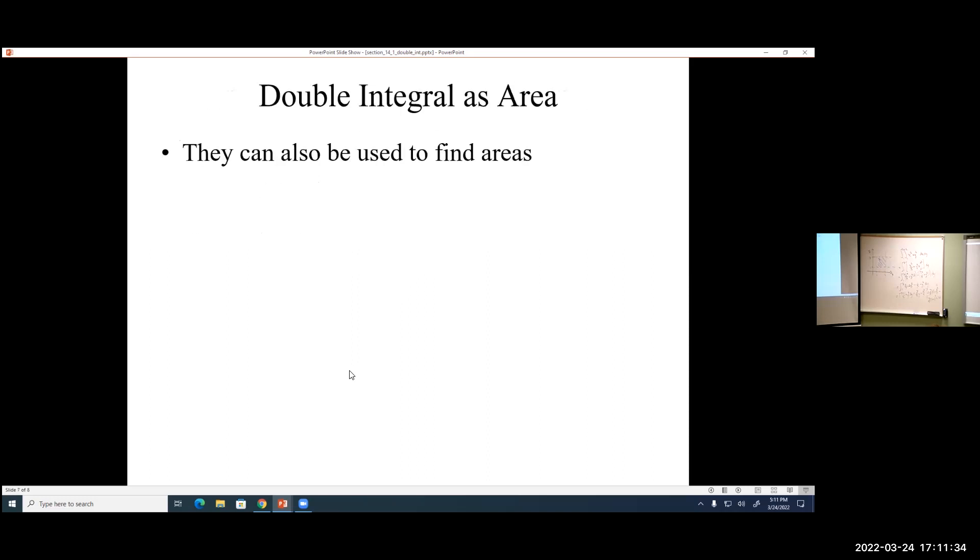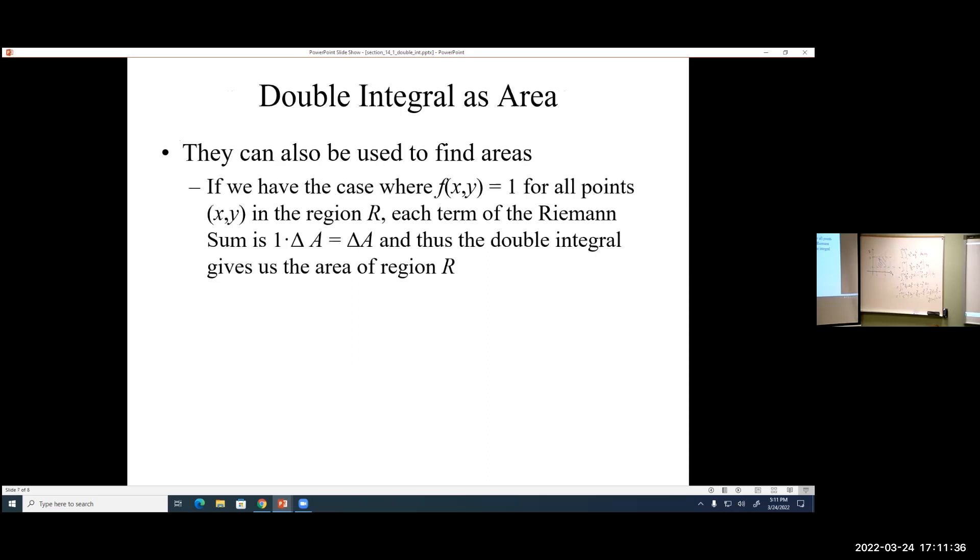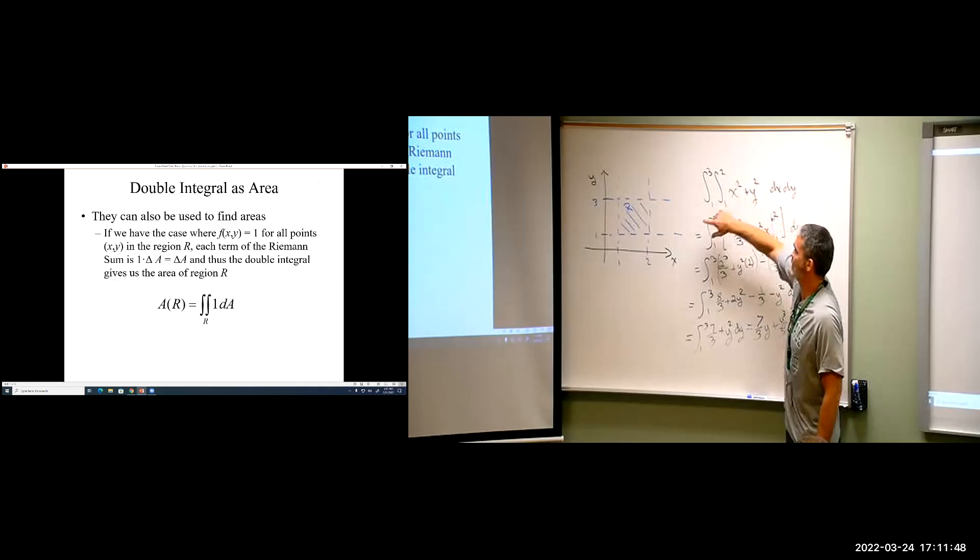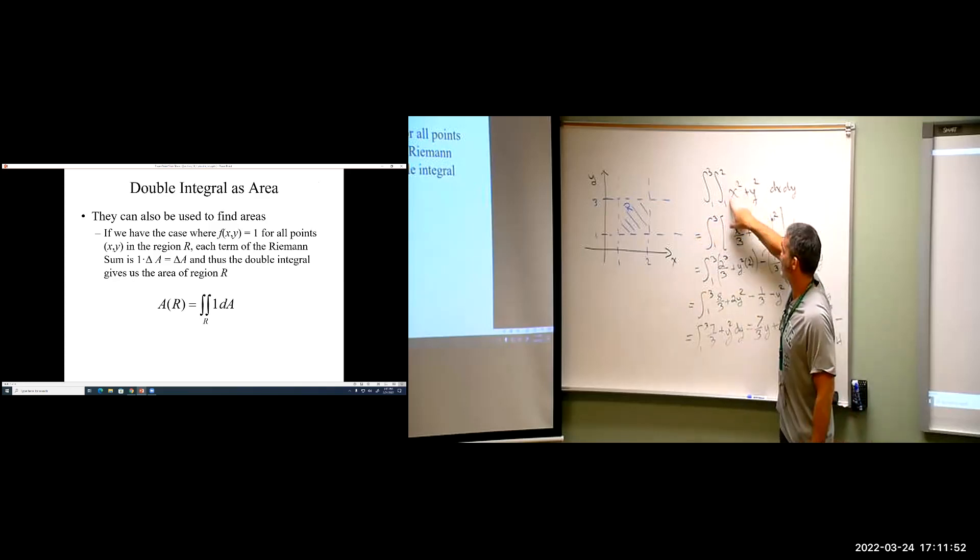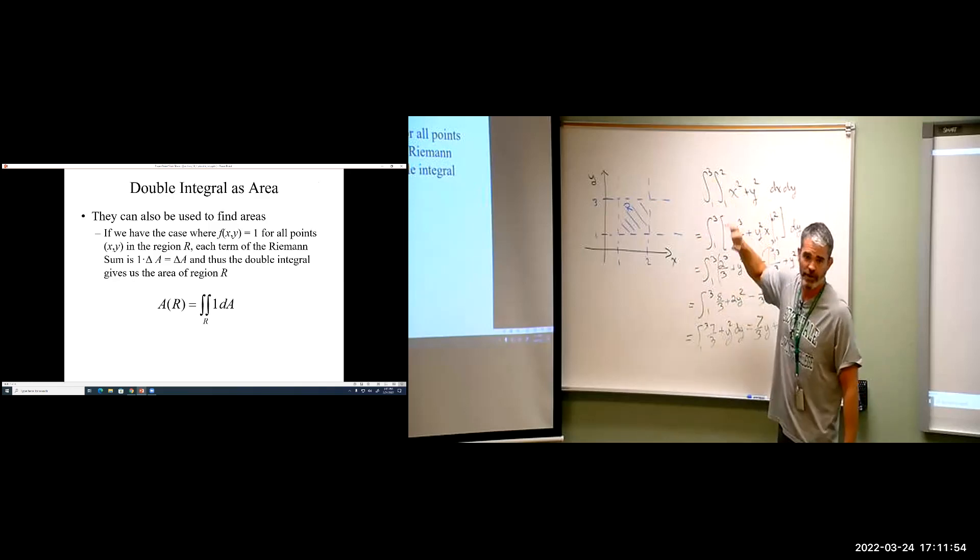Now, if we let the integrand be one, then what we're actually calculating is the area of that region. For example, if we didn't have a function here, if this was just one, all this is going to do is calculate the area of that rectangle. Because we're going to have two minus one, times three minus one, or the area of that rectangle, which is two.